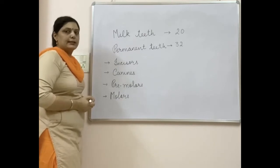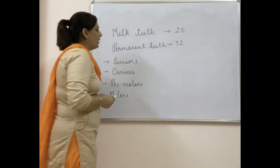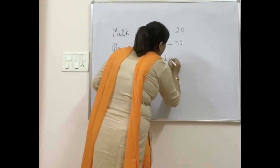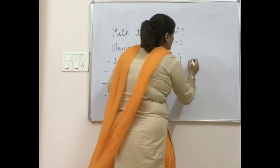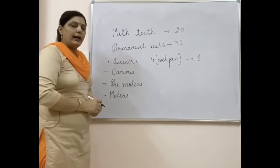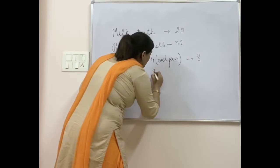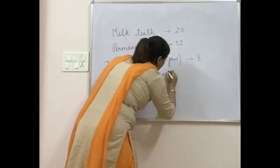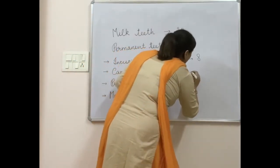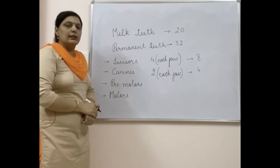Incisors are the front teeth, four in number in each jaw — so the upper jaw has four and the lower jaw has four, making eight incisors total. Their function is biting and cutting of food particles. Canines are two in number in each jaw, one on either side of the incisors, making four canines total. Their main function is tearing of food.